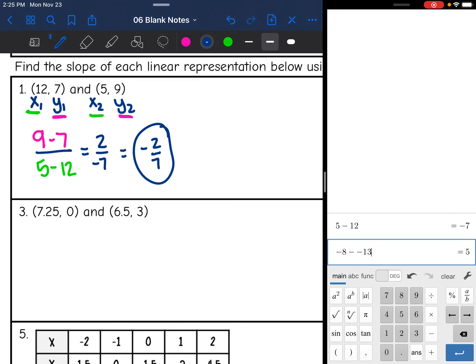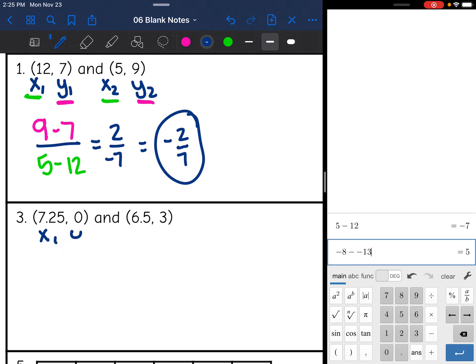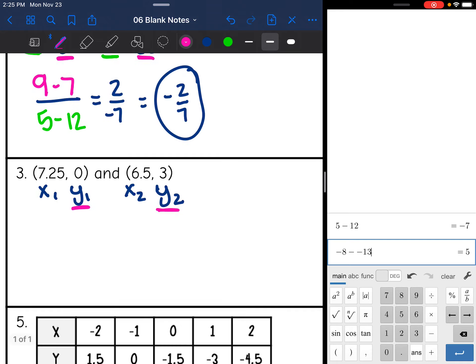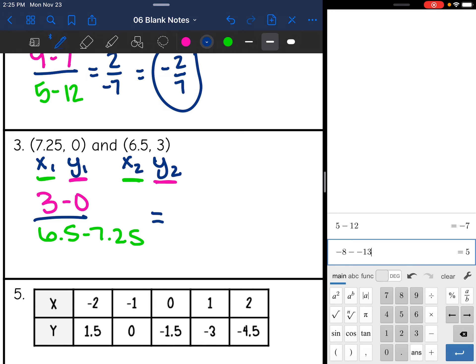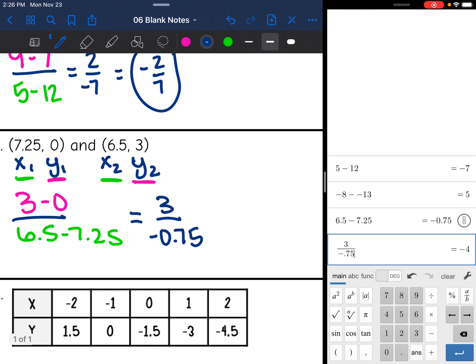Okay, number three, let's start the same way. x1, y1, x2, y2. So I'm going to do my y's on top, 3 minus 0, divided by my x's, 6.5 minus 7.25. And 3 minus 0 is 3. And 6.5 minus 7.25 is negative 0.75. Okay, that is not a nice looking number. So I'm going to type it into my calculator and let it tell me this simplified fraction. So I'm going to do 3 divided by negative 0.75. And I get negative 4 for the slope.